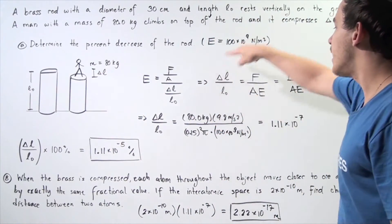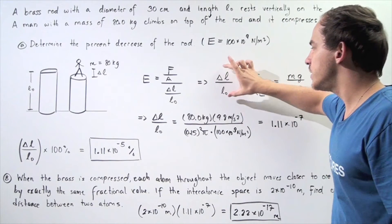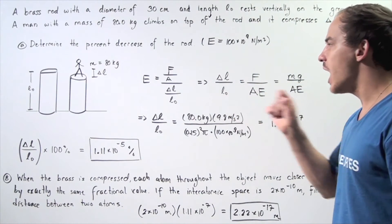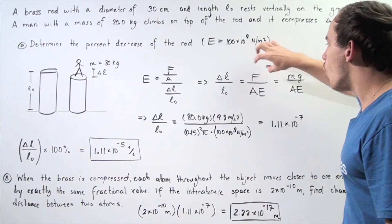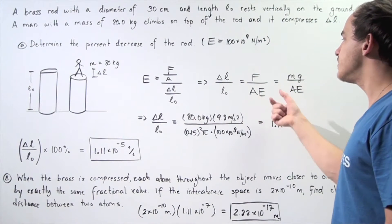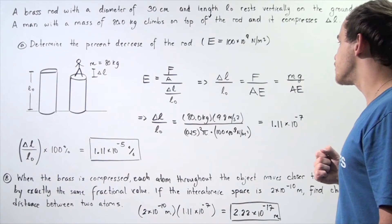And we get the following result. Our fractional decrease of the object, of the rod, is equal to force divided by area times our E, Young's modulus.